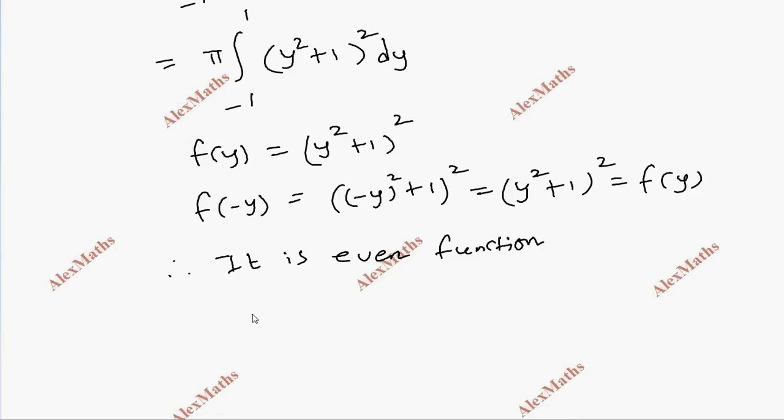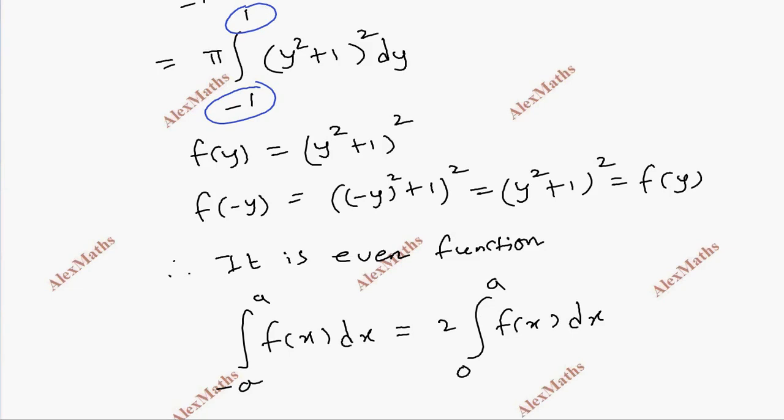We have integral minus a to a f of x dx equals 2 times 0 to a f of x dx. So we have minus 1 to 1, we have 2 times of 0 to 1. Volume equal to 2 pi integral 0 to 1, y square plus 1 whole square dy.